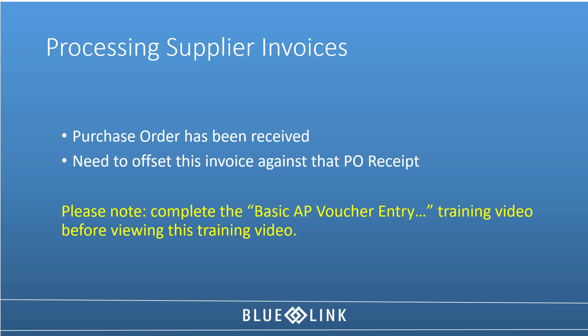We'll run through what to do when you receive an invoice from a supplier from whom you've purchased products, you've issued a purchase order, the products have come in, and you've run the purchase order received previously. Now you need to record the supplier's invoice. You should be familiar with how to do a basic accounts payable voucher before tackling this — if not, go back to the basic AP voucher entry training video for miscellaneous vendor invoices and run through that first.